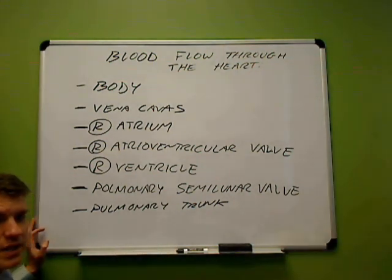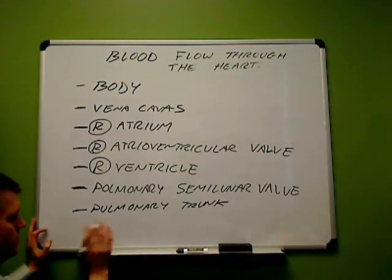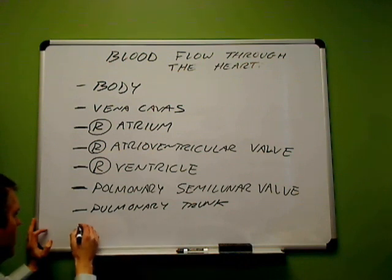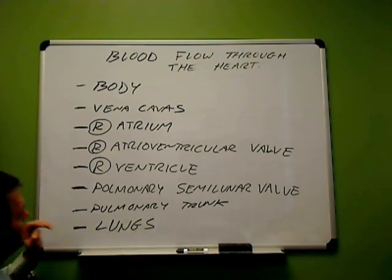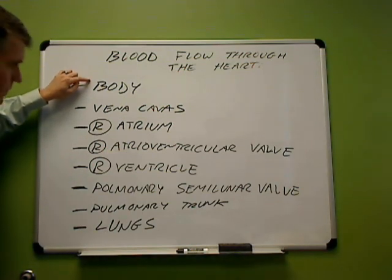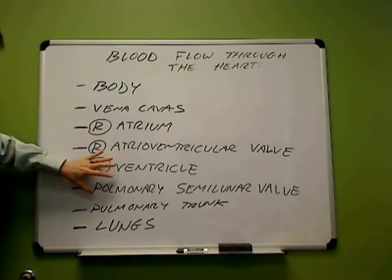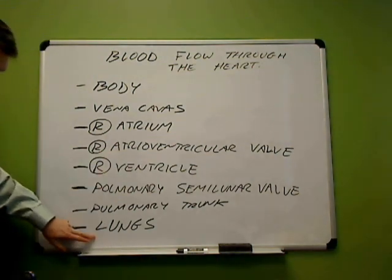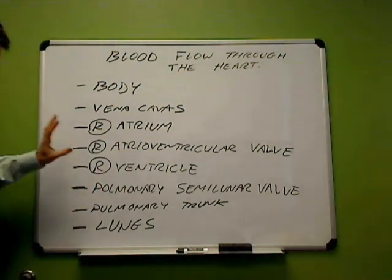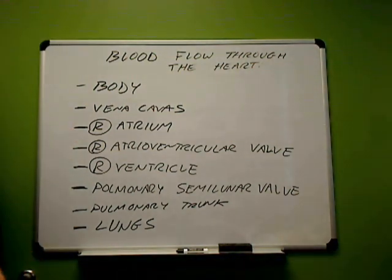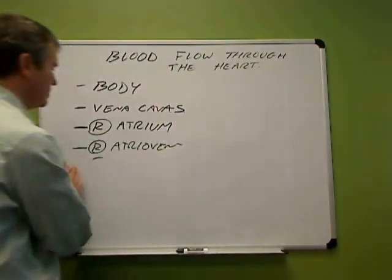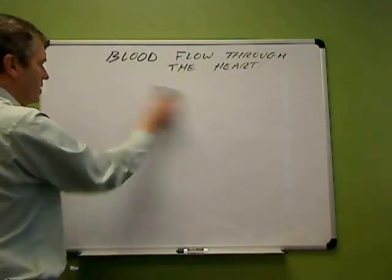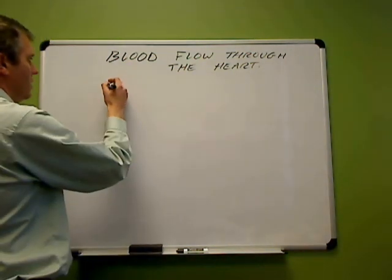After the blood passes through the pulmonary semilunar valve, it will be in the pulmonary trunk. At the pulmonary trunk, we are actually outside of the heart. That goes into the pulmonary arteries and then finally into the lungs. This blood came from the body, so it's deoxygenated — it passed through the right side of the heart and is now going out to the lungs to get oxygen.